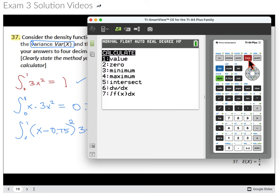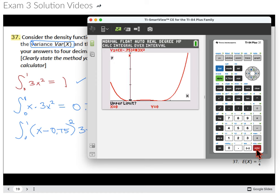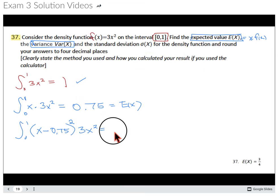I'm going to do the integral from 0 to 1. And we get that our variance is 0.0375. That's why you need the four decimal places. 0.0375.